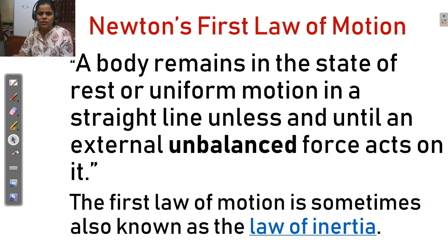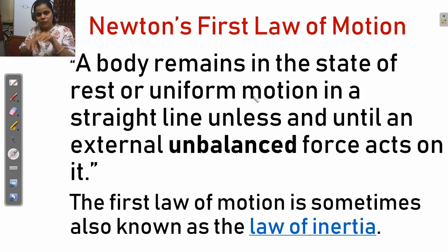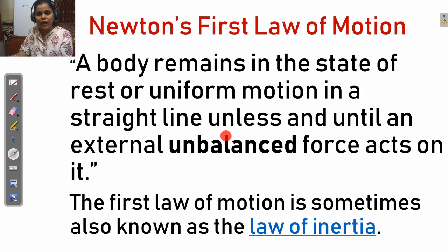So what is the statement of Newton's first law of motion? An object remains in a state of rest or uniform motion — uniform motion means if any object travels the same distance in the same time interval. Any object remains in the state of rest or uniform motion in a straight line unless and until an external unbalanced force acts on it.